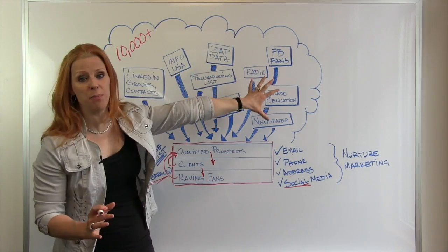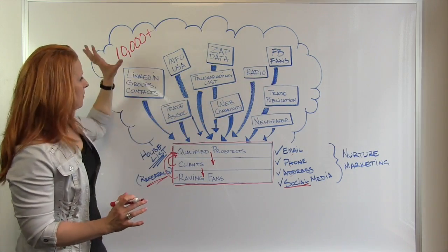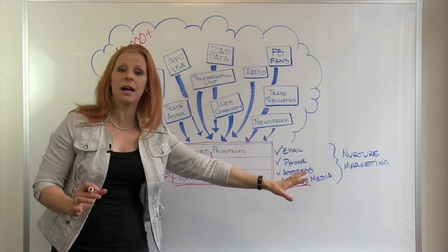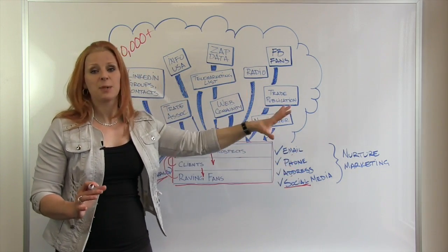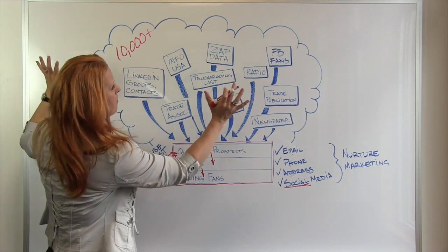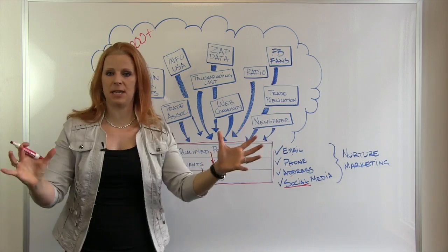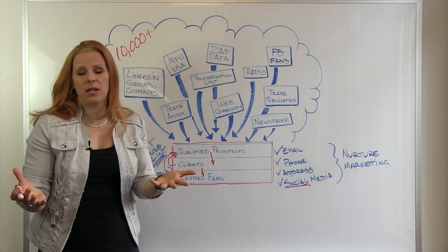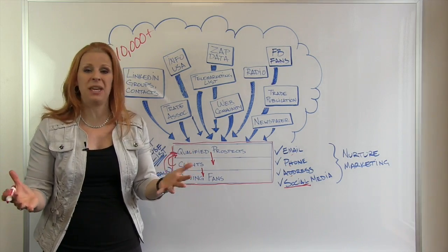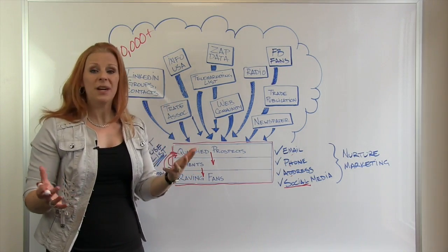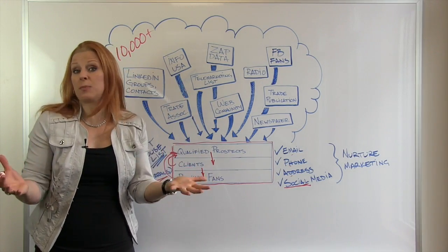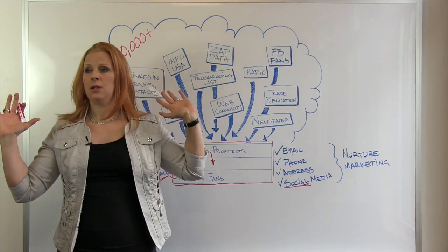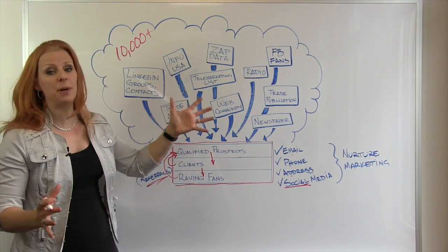So how do you take this big mass of randomness and organize it? For most of you watching this, you wouldn't be able to afford to market to 10,000 businesses. To do one direct mail campaign, it's going to cost somewhere around $20,000 to $30,000 if you mailed everybody once or twice — and you don't want to just mail once or twice; you want phone follow-up and repetition. It gets really expensive doing a shotgun approach mailing the masses, and it's not something I recommend.